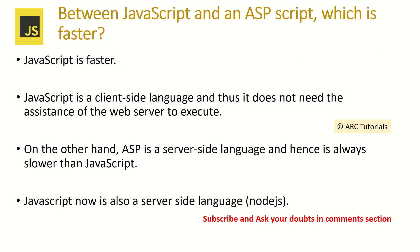Explain the difference between JavaScript and ASP script and compare which is faster. JavaScript is faster. JavaScript is a client-side language and thus it does not need the assistance of any web server to execute. On the other side, ASP is a server-side scripting language, hence it is slower than JavaScript. JavaScript can now also be used as a server-side language using frameworks like Node.js.